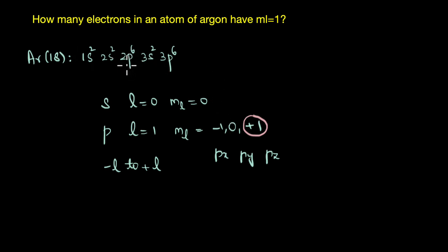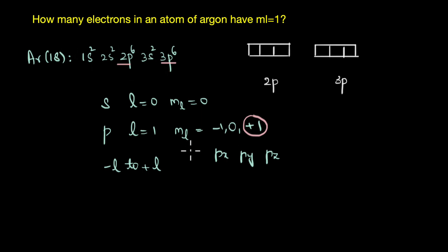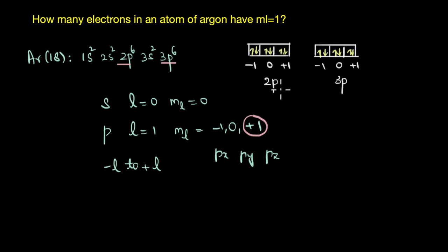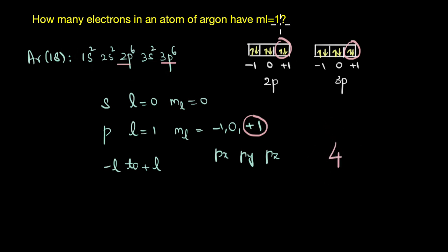We have p orbitals at the second and third energy levels — 2p and 3p. The ml values for each set are minus one, zero, and plus one. Since every orbital accommodates two electrons, the orbital with ml equal to plus one in the 2p subshell holds two electrons, and the orbital with ml equal to plus one in the 3p subshell holds two more electrons. That gives us a total of four electrons in argon with ml equal to one.